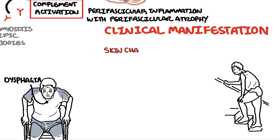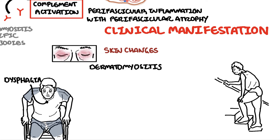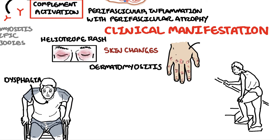The skin changes associated with dermatomyositis include pathognomonic findings such as heliotrope rash, which is periorbital erythema with edema most often of the upper eyelids, and Gottron's papules, which are pink scaly papules overlying the interphalangeal and metacarpophalangeal joints in the hands.